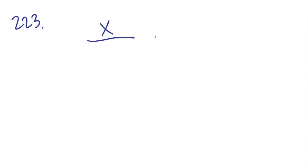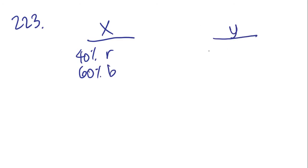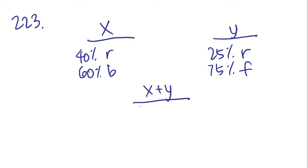Number 223. Seed mixture X is 40% ryegrass and 60% bluegrass. Mixture Y is 25% ryegrass and 75% fescue. If a mixture of X and Y contains 30% ryegrass, what percent of the weight of the mixture is X?